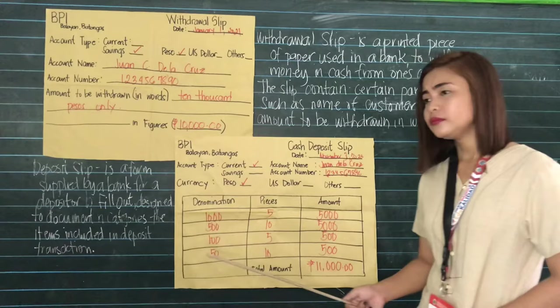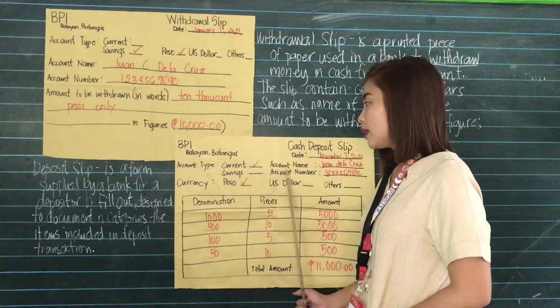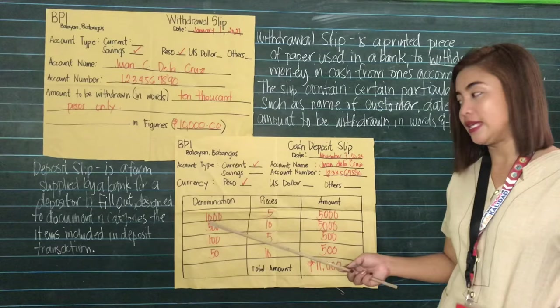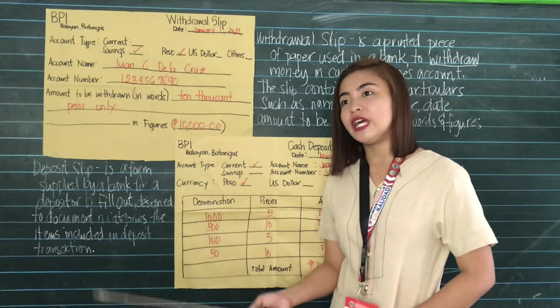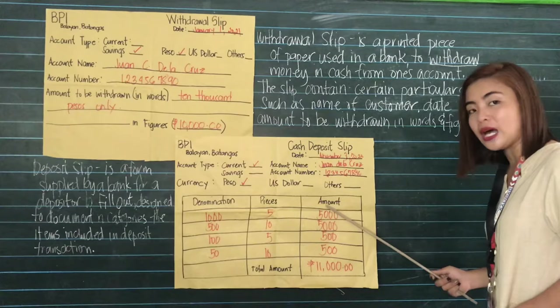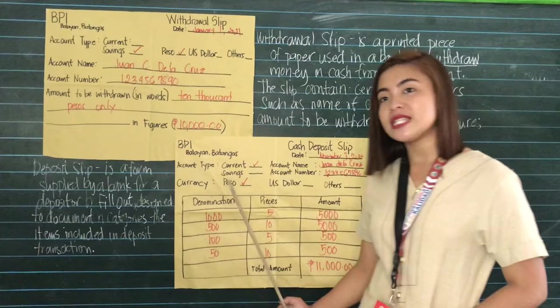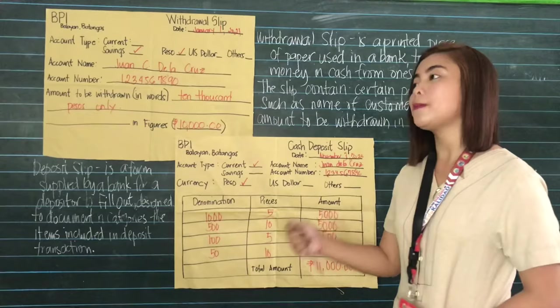And then the currency — in what bank note are you going to deposit to the account. So that would be peso in my case. There are three columns that you need to fill out in a cash deposit slip: denomination, pieces, and amount.